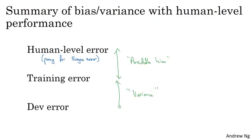And the big difference between our discussion here and what we saw in earlier courses was that instead of comparing training error to 0% and just calling that the estimate of the bias, in contrast, in this video, we have a more nuanced analysis.